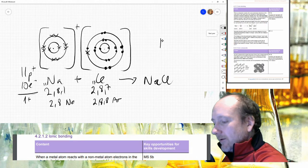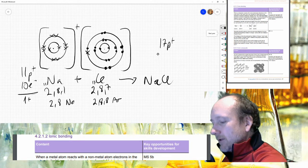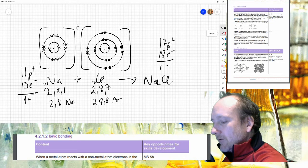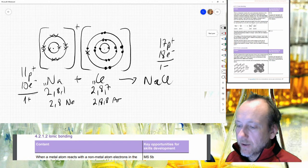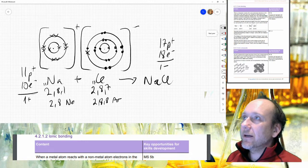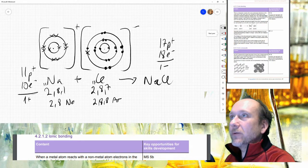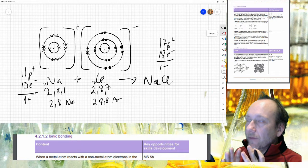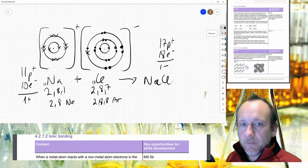And on chlorine's side, we had 17 protons. We still have 17 protons, but now we've got 18 electrons. And the difference is one negative charge more than it should have. So we can draw a negative charge in there. And what happens between those two is that they attract each other and they will form a very hard substance with a high boiling point.